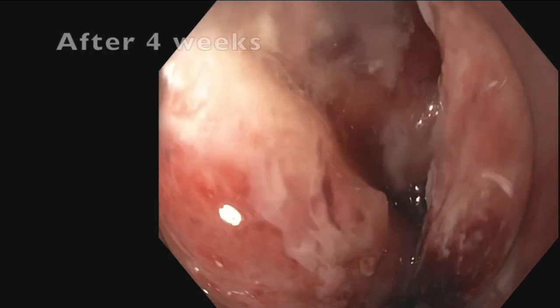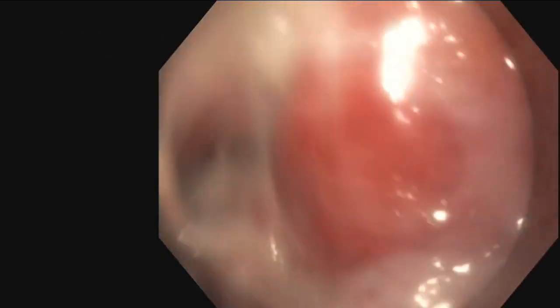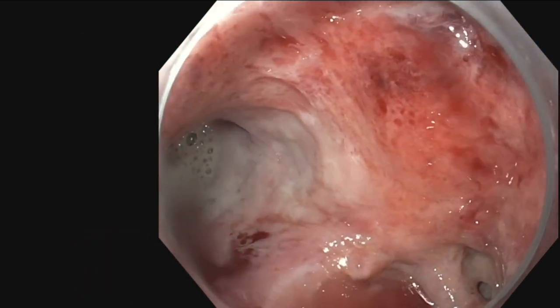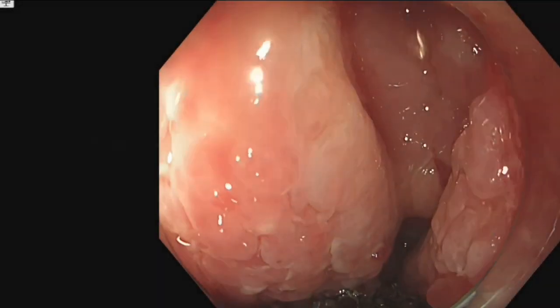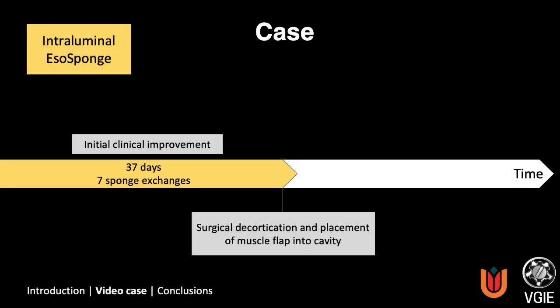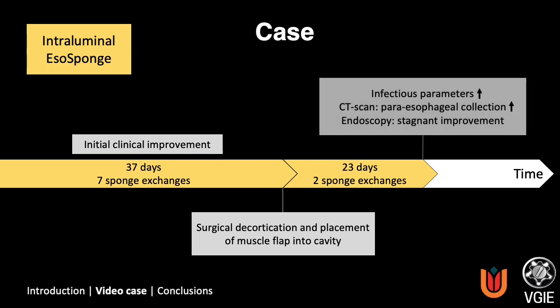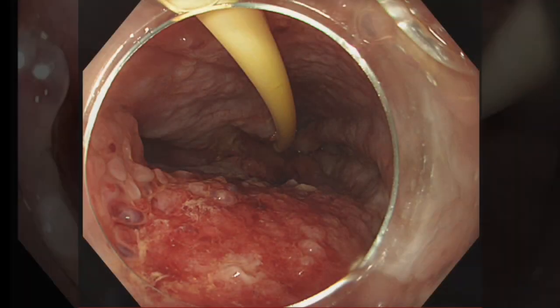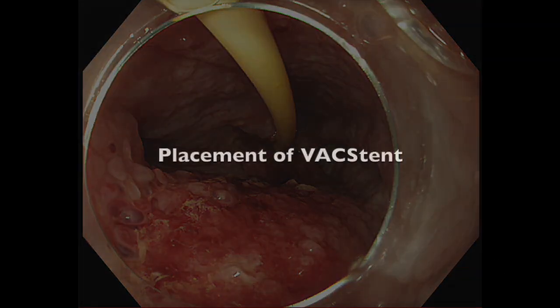During the following weeks, the defect looks cleaner and becomes smaller. Due to the stagnant improvement, a muscle flap was placed surgically into the cavity. After surgery, treatment with an intraluminal sponge was continued to stimulate granulation of the esophageal defect. However, after 23 days and two sponge exchanges, infectious parameters increased and CT scans showed expansion of the paraesophageal collection. Furthermore, endoscopic improvement was stagnant as the proximal side of the defect remained open. Therefore, we decided to place a VaxStent.